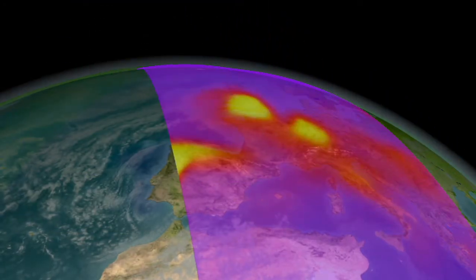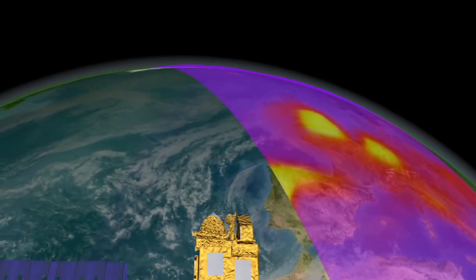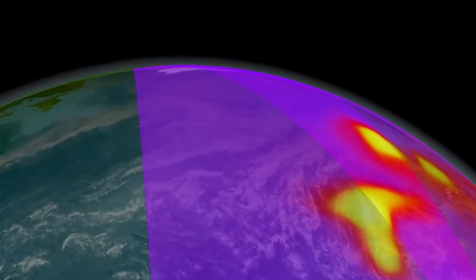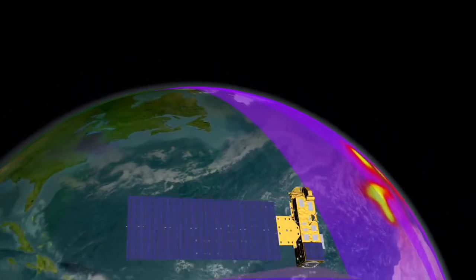NASA also monitors other greenhouse gases, such as methane, nitrous oxide, and CFCs. In recent years, CFCs have decreased. Methane and nitrous oxide are on the rise.